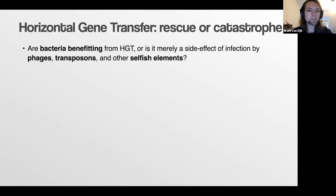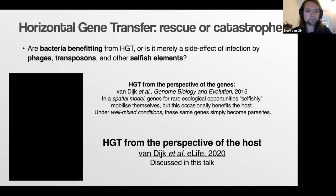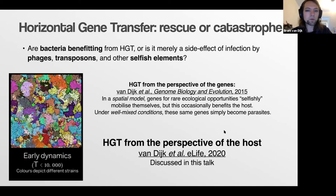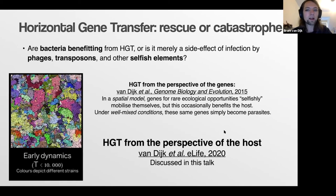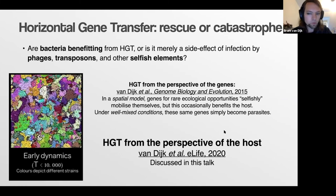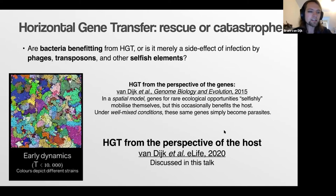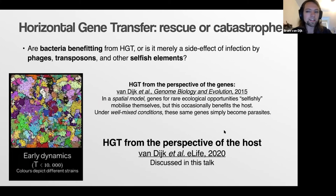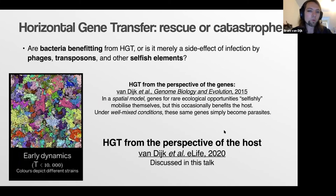My question today is: given so much horizontal gene transfer, are bacteria actually benefiting from it, or should we see it merely as a side effect of selfish genetic elements such as phages and transposons that accidentally transfer a gene? That's what the title 'rescue or catastrophe' is based on. In a previous paper I explored a spatial model where genes for rare ecological opportunities would 'selfishly' mobilize themselves, but occasionally also benefit the host.